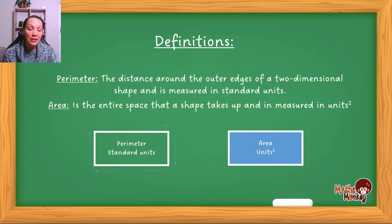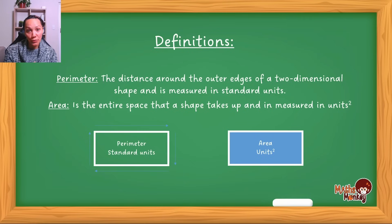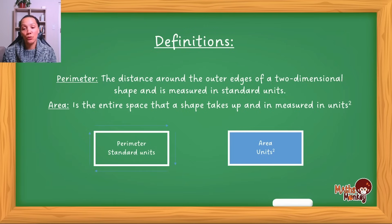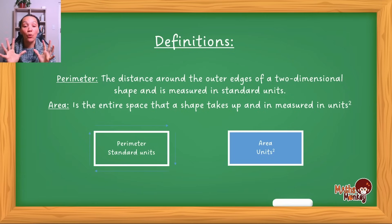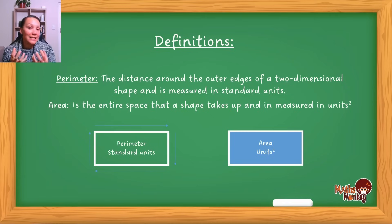So that's essentially the definitions. Now in a test situation, they are not going to be asking you a perimeter of a rectangle as just a rectangle. They're going to put all this information in a scenario-type way.